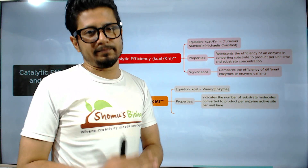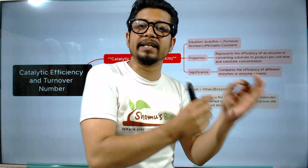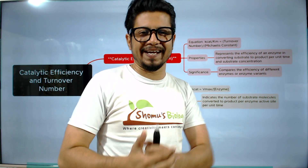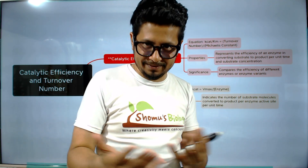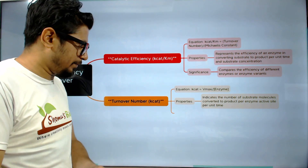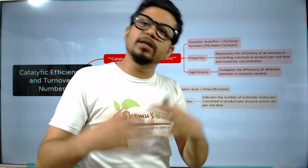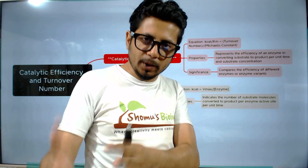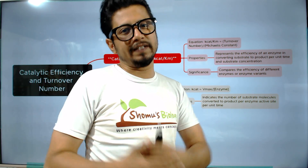The property of turnover number is that it indicates the number of substrate molecules converted to product per enzyme active site per unit time. If a single enzyme has multiple active sites, it has a higher turnover number. Multi-subunit proteins will therefore convert more substrate into product per unit time per active site.